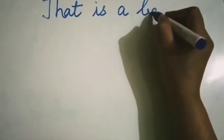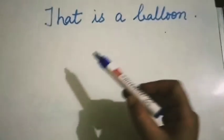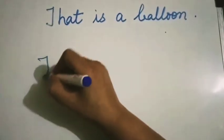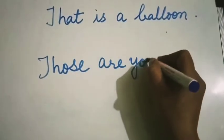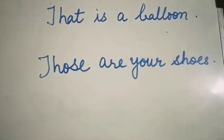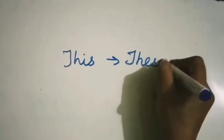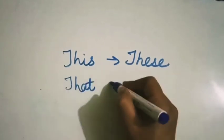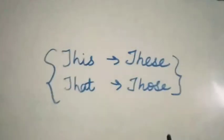When we point to something from far away, we use 'that' — for example, 'That is a balloon.' And when it is plural from far away, we use 'those' — for example, 'Those are your shoes.' So the plural of 'this' is 'these', and the plural of 'that' is 'those'. Both are demonstrative pronouns.